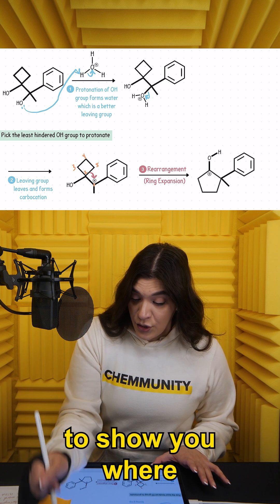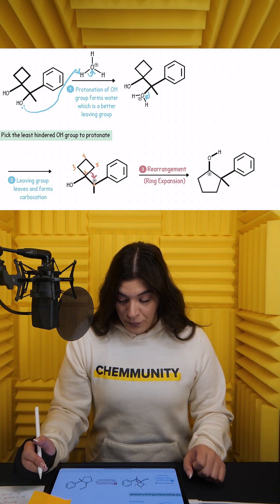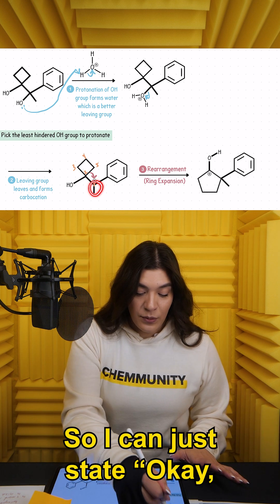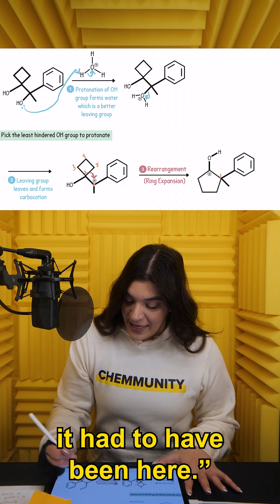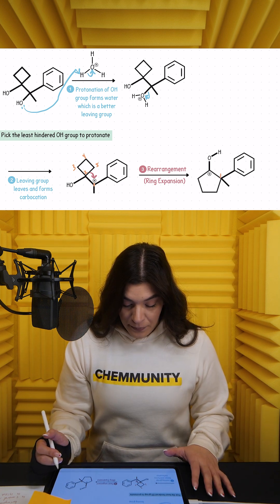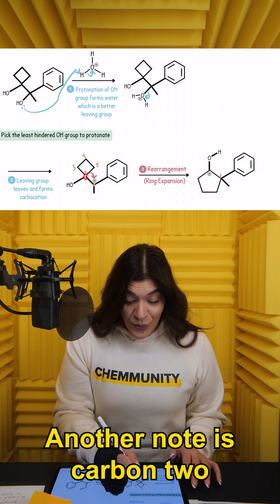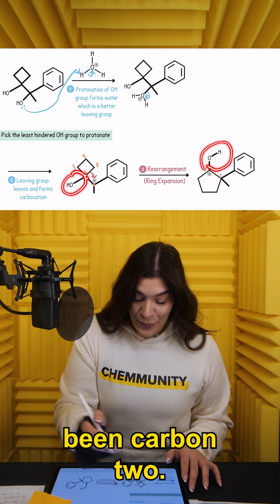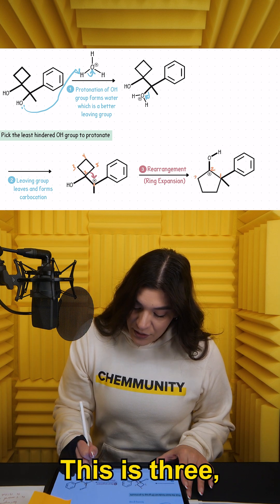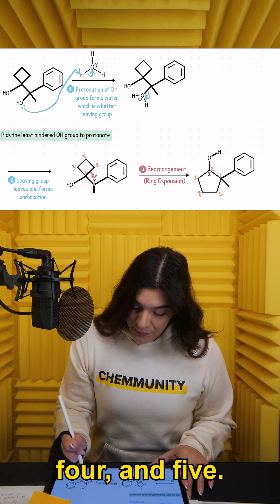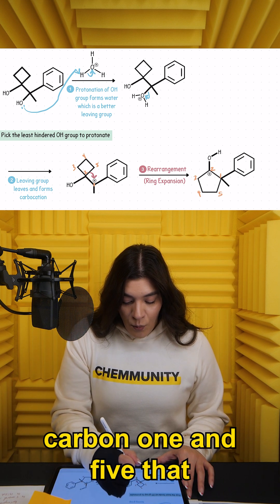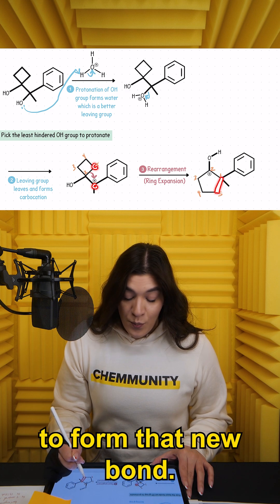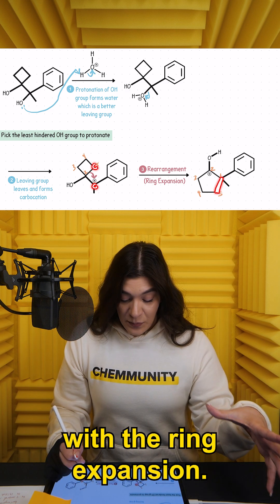Let me number this again to show you where everything goes. It's easy to tell that carbon one has that methyl group, so it had to have been here — that's carbon one. Carbon two had that OH, so that had to have been carbon two. Then I can just keep going: this is three, four, and five. Notice it's carbon one and five that are connecting together to form that new bond, and that's what's helping with the ring expansion.